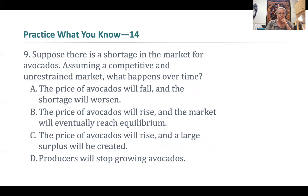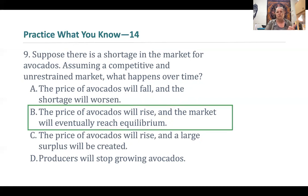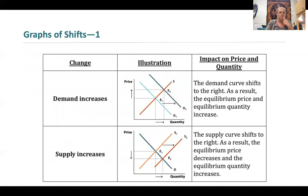Let's practice. Suppose there's a shortage in the market for avocados — greater demand than supply. Assuming a competitive and unrestrained market with no government intervention, what will happen over time? Since there's a shortage, more people want this good than there is of it available. The only way for the market to clear is to allow the price to fluctuate upward towards equilibrium, so we should see the price of avocados rise and the market move towards equilibrium.